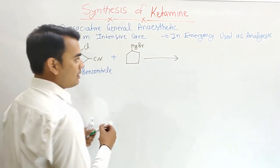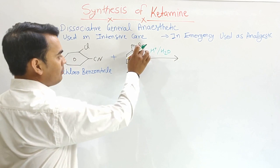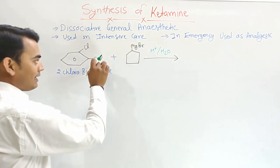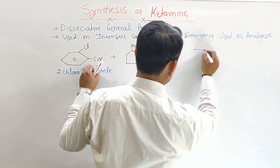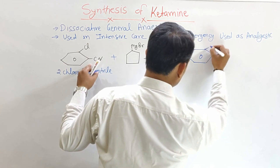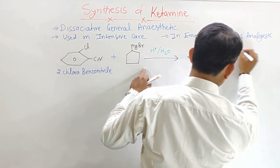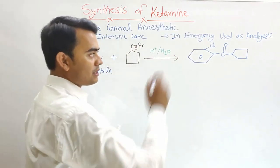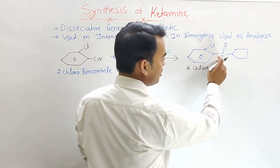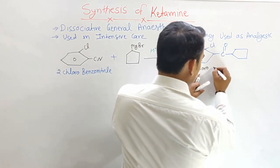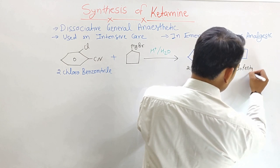This reaction takes place in the presence of hydrogen ion and water. The cyclopentyl magnesium attaches with this cyanide, and ultimately the phenyl ring has the chlorine on the second position. A new intermediate forms and the name of this intermediate is 2-chlorophenyl cyclopentyl ketone.